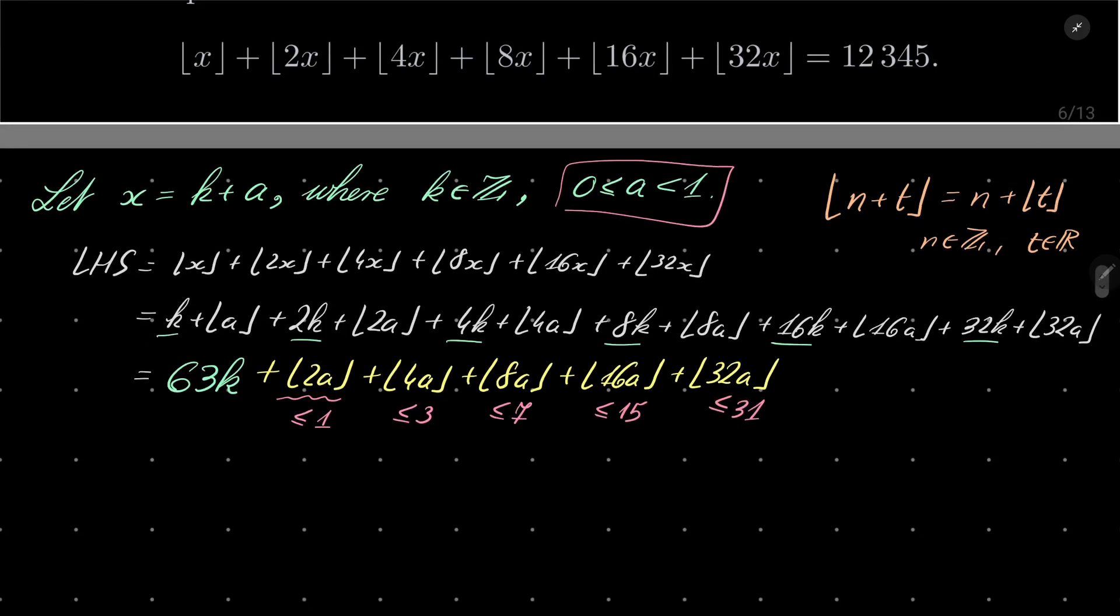So in other words, our result is 63 times k plus some integer l, where l is some number between 0 and, if we add 1 plus 3 plus 7 plus 15 plus 31, I believe that we get 57.